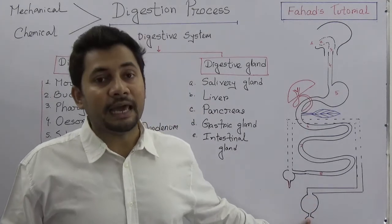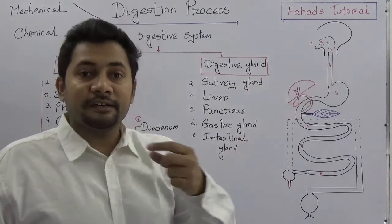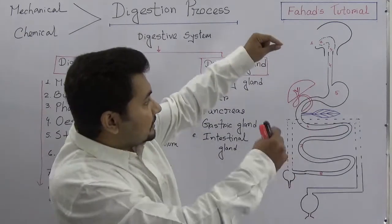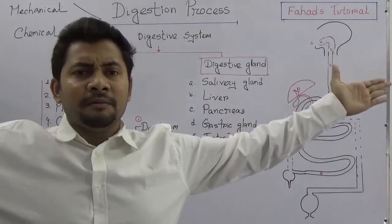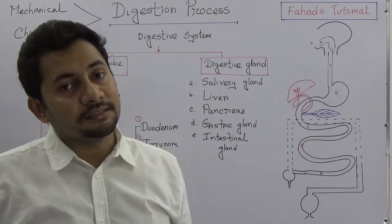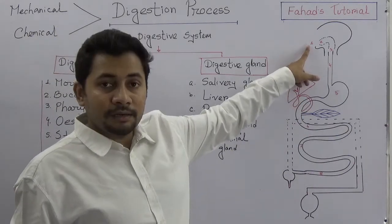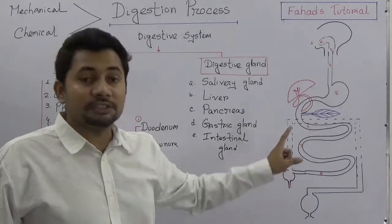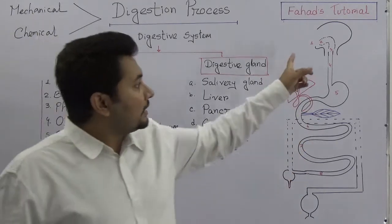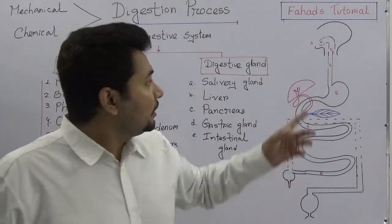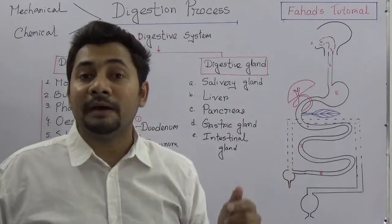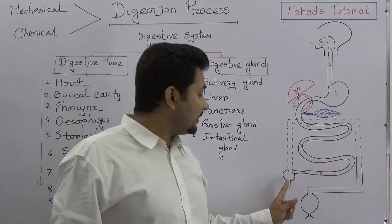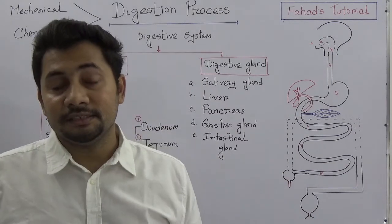The last part is the anus. So from mouth to anus, this is a single tube — most probably 8 meters long — known as the digestive tube. When we take food in our day-to-day life, we take it through our mouth and buccal cavity, swallow it, and then it goes to the stomach, then the small intestine, then the large intestine, and then the anus.